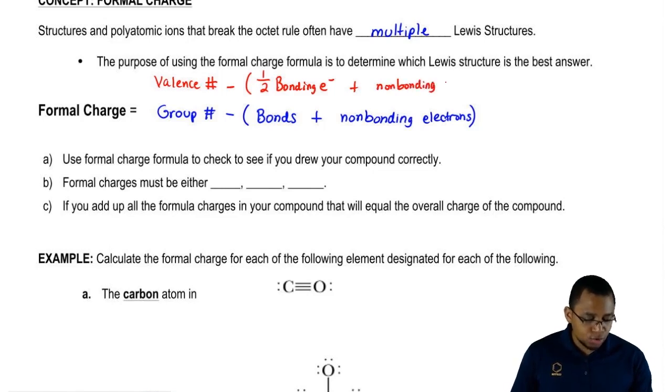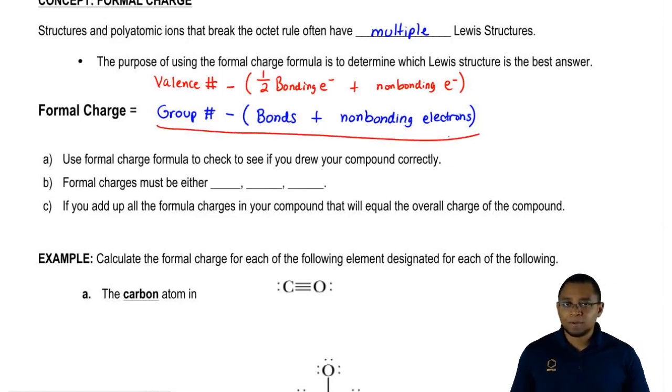I personally don't like to introduce halves into calculations. Instead of saying half of your bonding electrons, I just say number of bonds. It's the same exact thing. If you use this simpler version, you'll get the same answer.